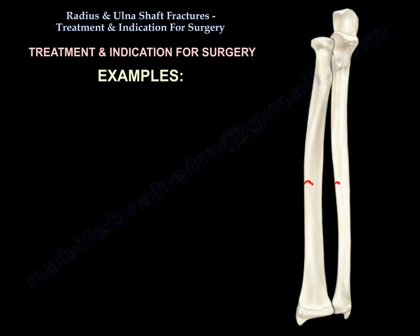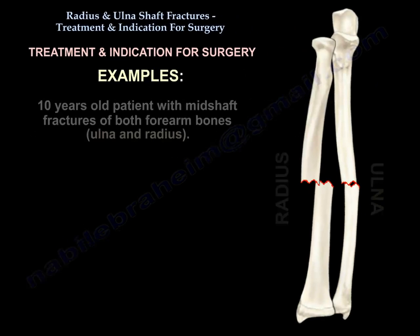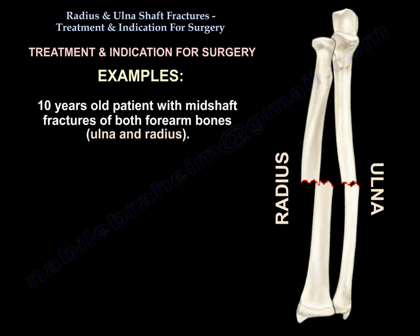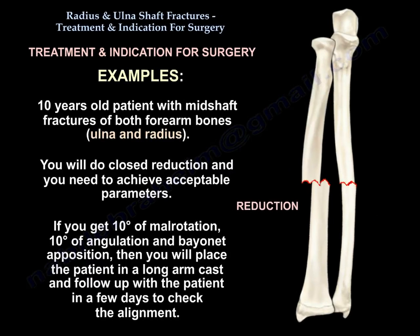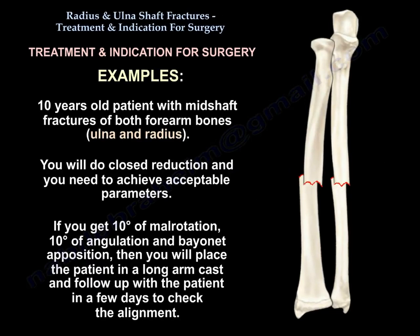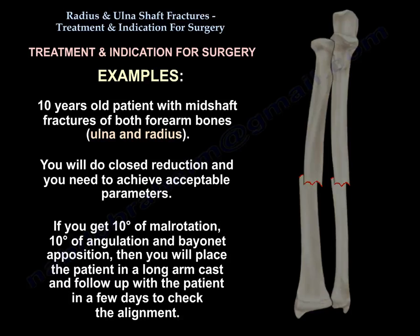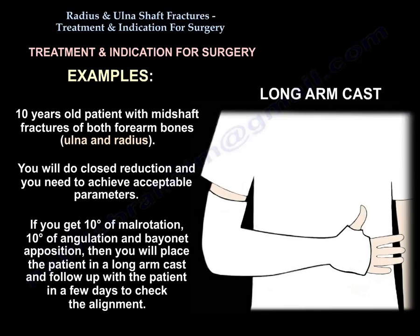Let's see some examples. A 10-year-old patient with a mid-shaft fracture of both forearm bones: you will do closed reduction. You need to achieve acceptable parameters. If you get 10 degrees malrotation, 10 degrees angulation, and bayonet opposition, then you will place the patient in a long arm cast and follow up in a few days to check on the alignment.